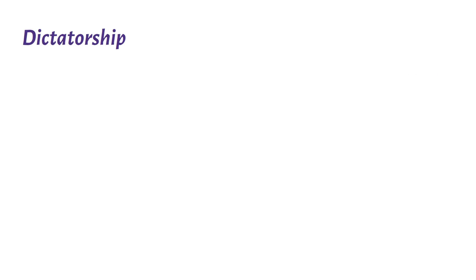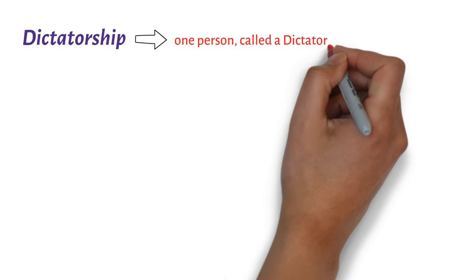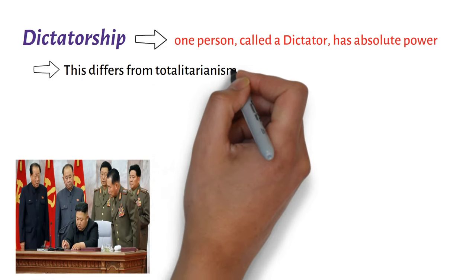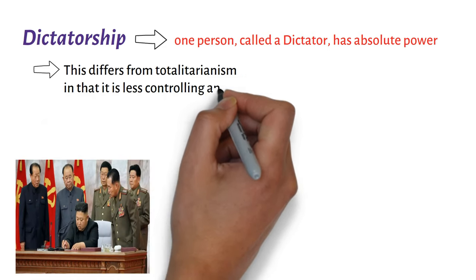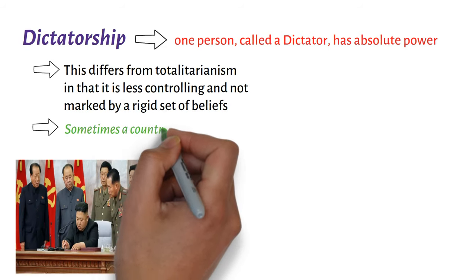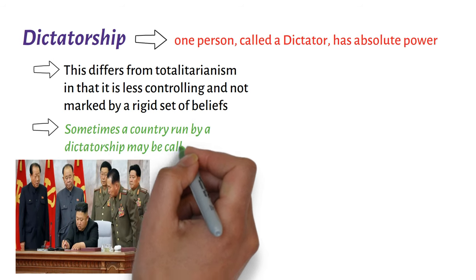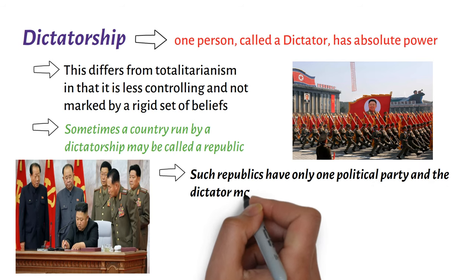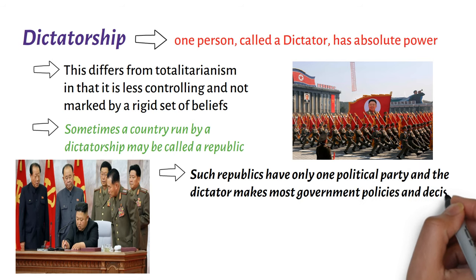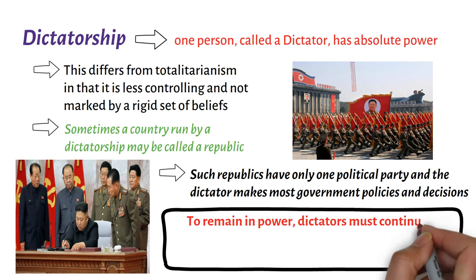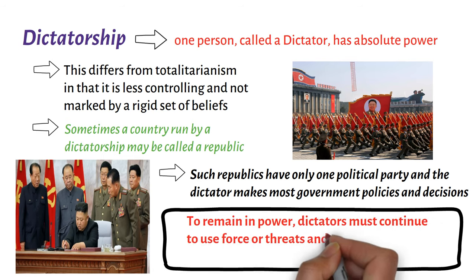On Dictatorship. In a dictatorship, one person, called a dictator, has absolute power. This differs from totalitarianism in that it is less controlling and not marked by a rigid set of beliefs. Sometimes a country run by a dictatorship may be called a republic. Such republics have only one political party, and the dictator makes most government policies and decisions. To remain in power, dictators must continue to use force or threats and suppress the people's freedom.